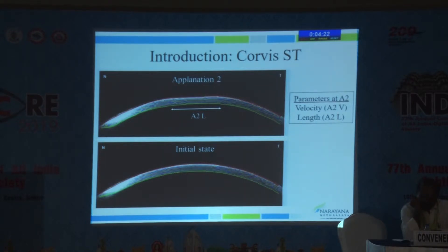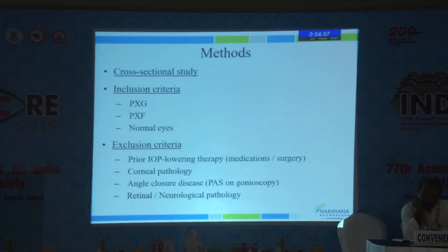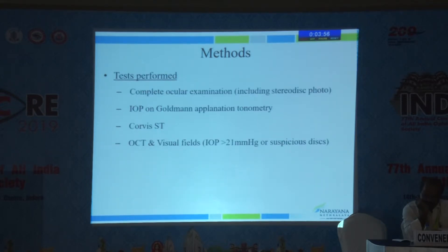Having described this background, I will now describe our study, whose objective was to compare the corneal biomechanical parameters between eyes with pseudoexfoliation glaucoma, pseudoexfoliation syndrome, and normals using the Corvis ST. This was a prospectively planned cross-sectional study. We excluded eyes with prior IOP-lowering therapy, corneal pathology, angle closure disease, and retinal and neurological pathology. A complete ocular examination was performed, including Goldmann applanation tonometry and Corvis ST in random order. Eyes with high IOP or suspicious discs also underwent OCT and visual fields.